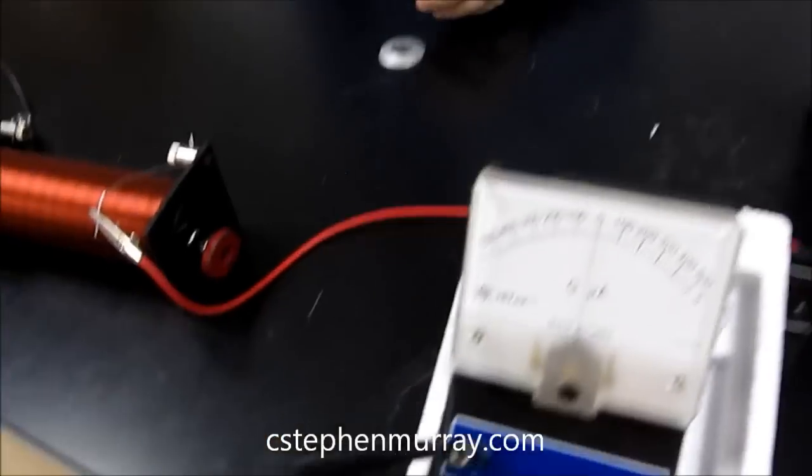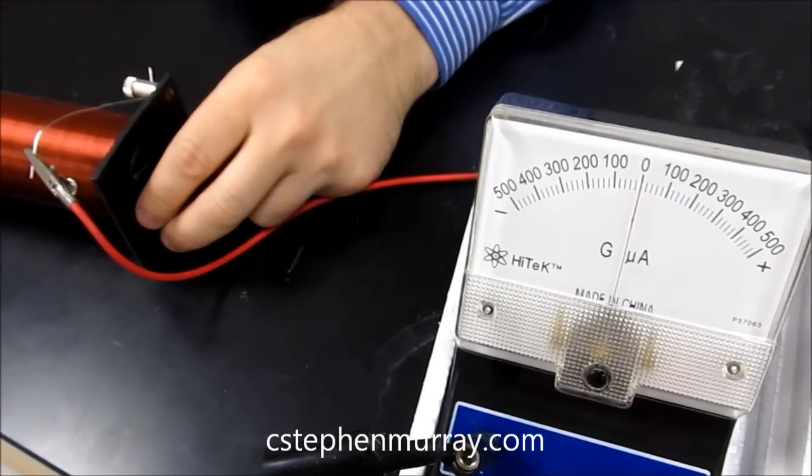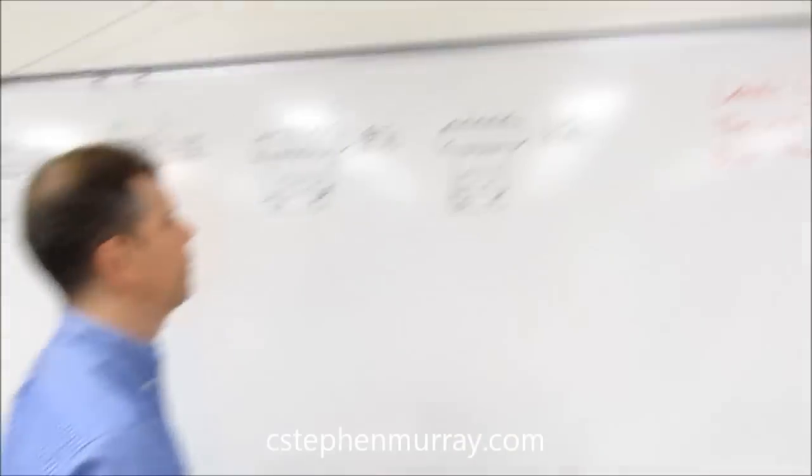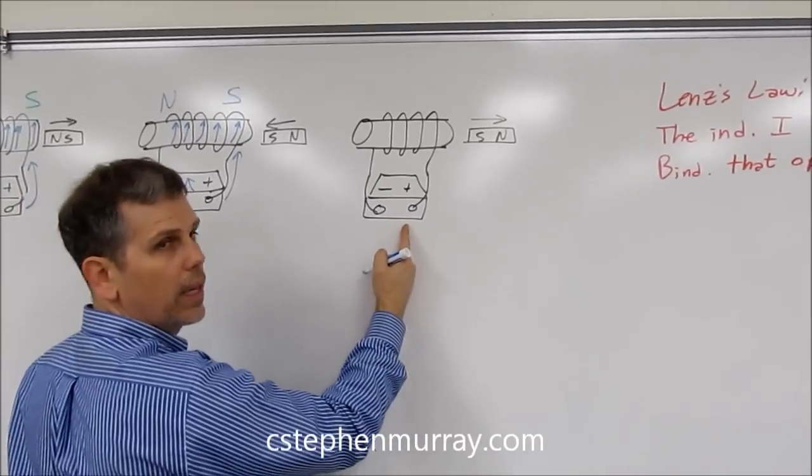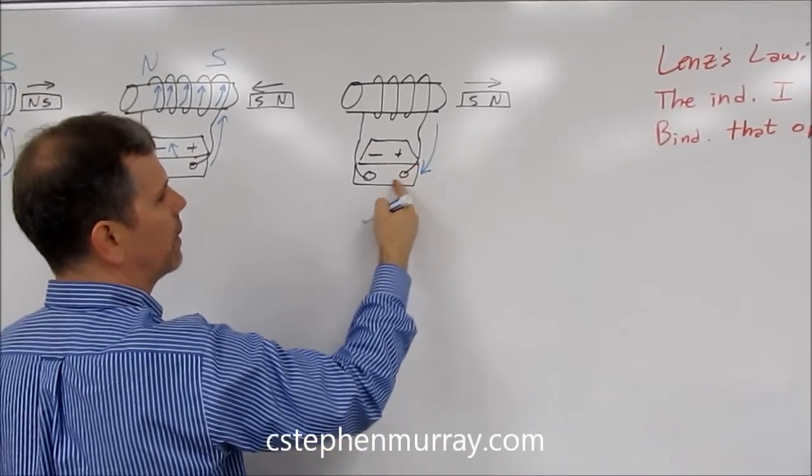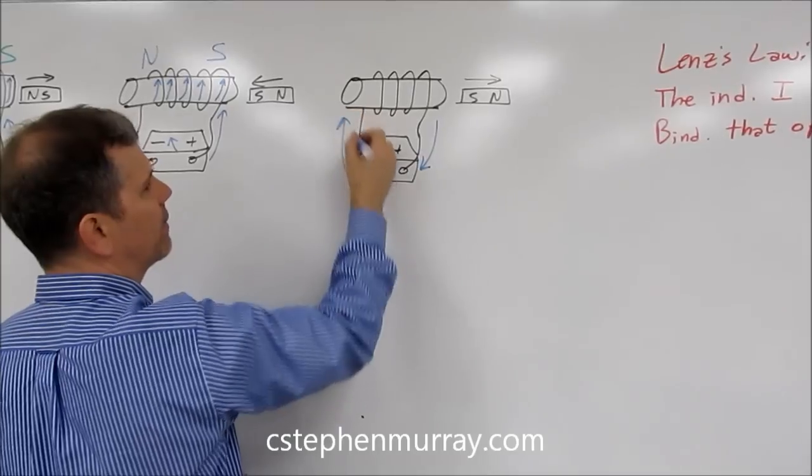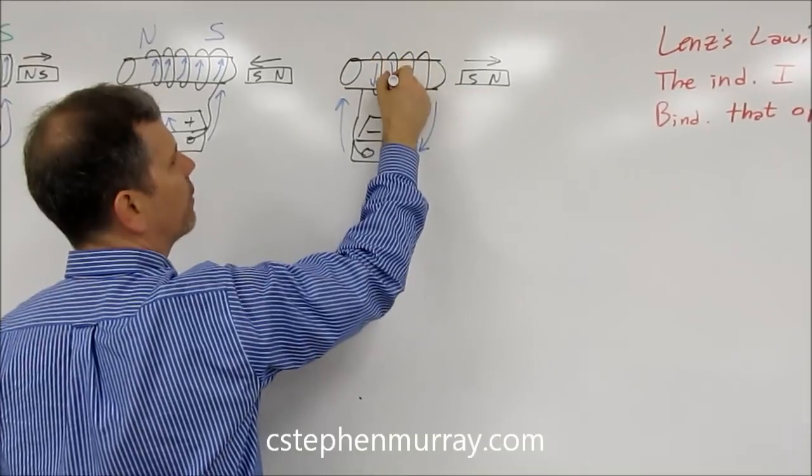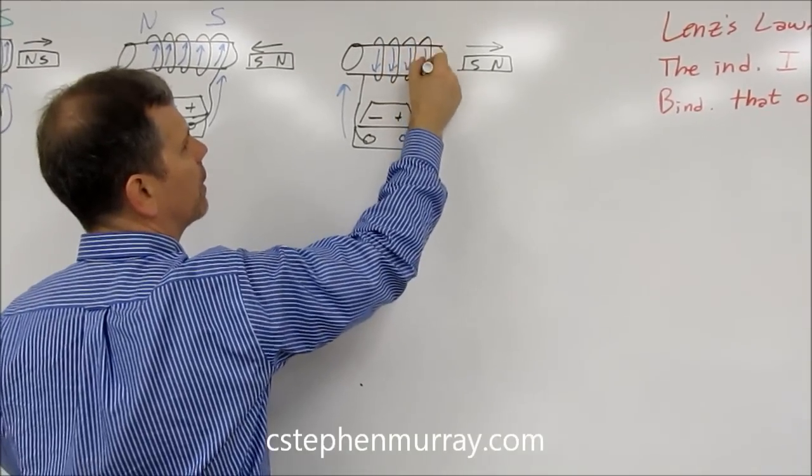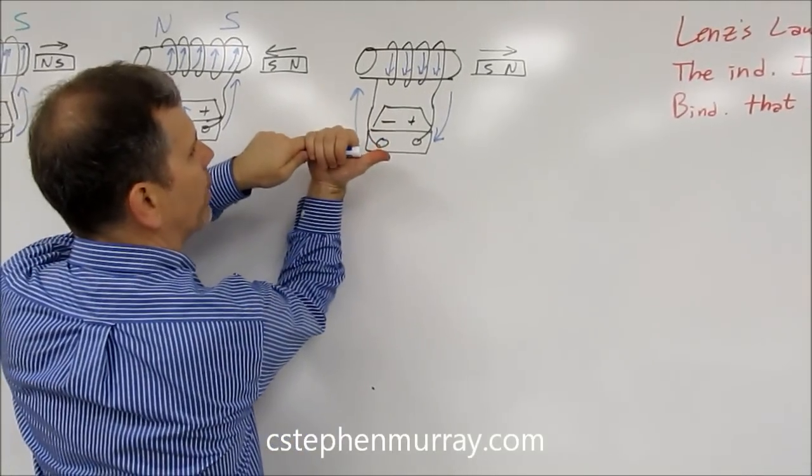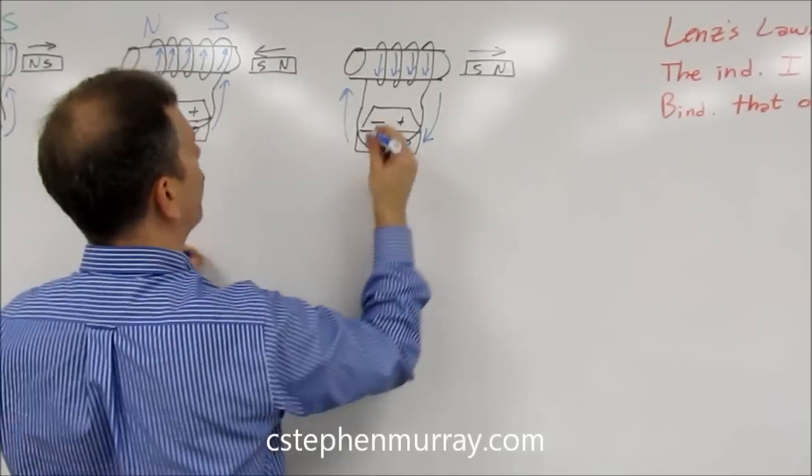Now we take the south out of the solenoid. Watching, it read positive, which means current flowed into the positive side of the ammeter, and out of the negative side. Again, from behind, all of the current in each of these is now flowing down the front. Fingers from behind, down in the front, that's a north pole.